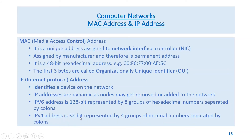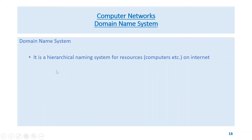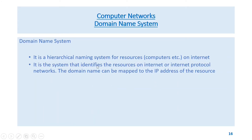IPv4 address is 32-bit, represented by four groups of decimal numbers separated by dots. Domain Name System (DNS) is a hierarchical naming system for resources and computers on the internet. It is the system that identifies resources on the internet or internet protocol networks.